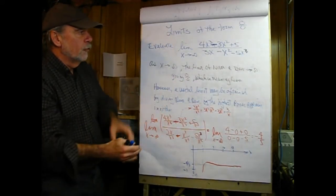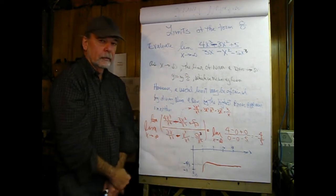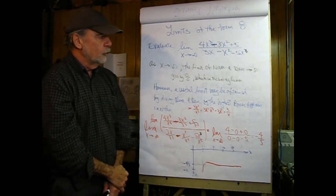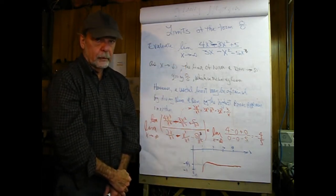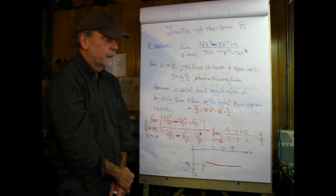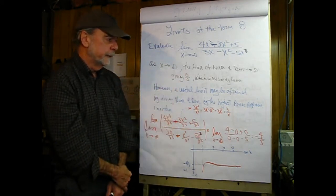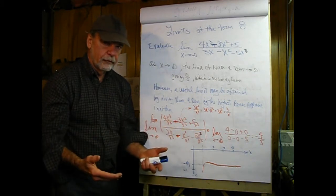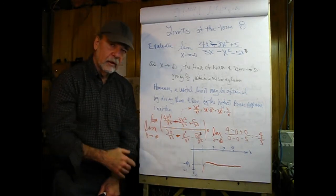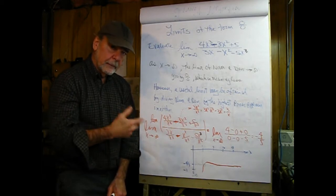Let's take a look at limits of the form 0 over 0. With this expression, as x goes to infinity the numerator goes to infinity, and likewise the denominator goes to infinity. We end up with the uncomfortable arrangement of infinity over infinity — tempting to say that's like 0 over 0. What does infinity over infinity mean? In this case, it doesn't give a meaningful idea of the limit, but this may in fact have a meaningful limit if we do a little manipulation.